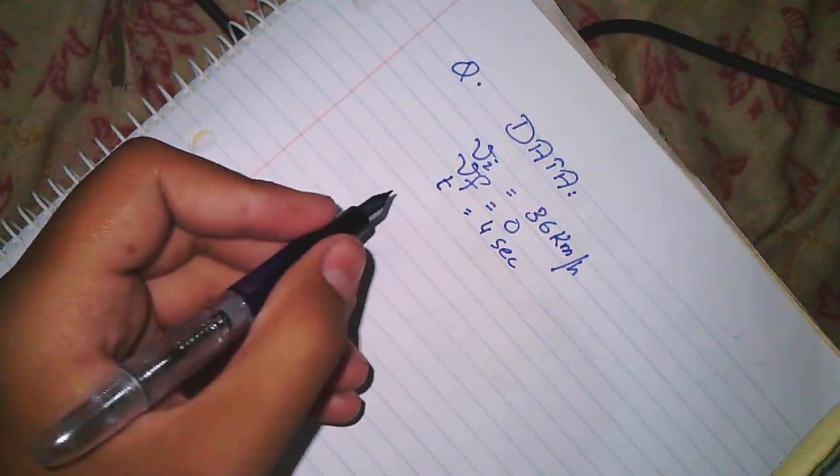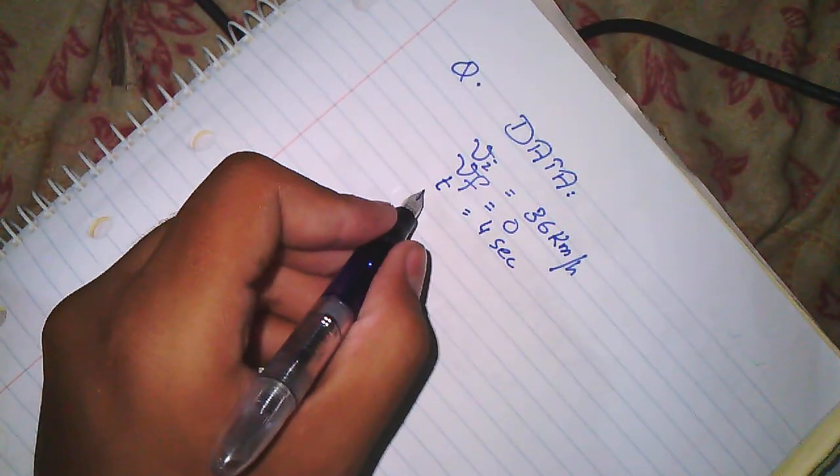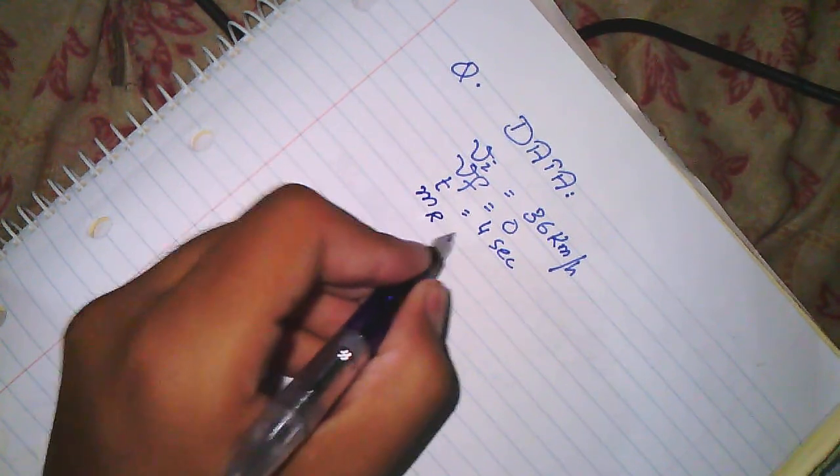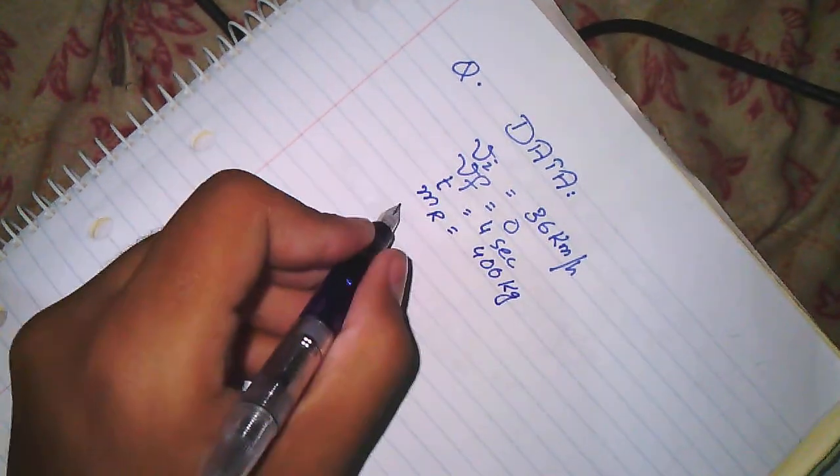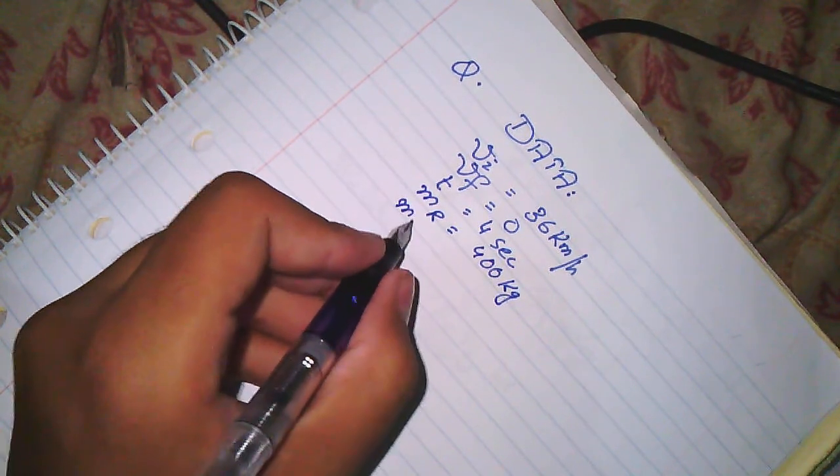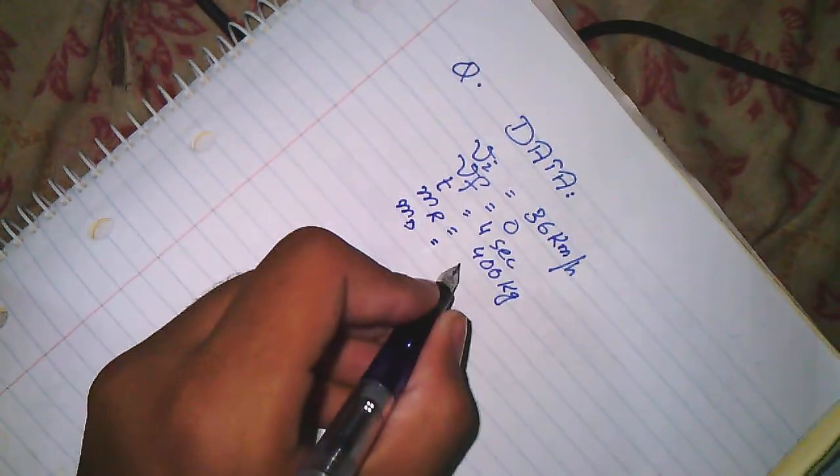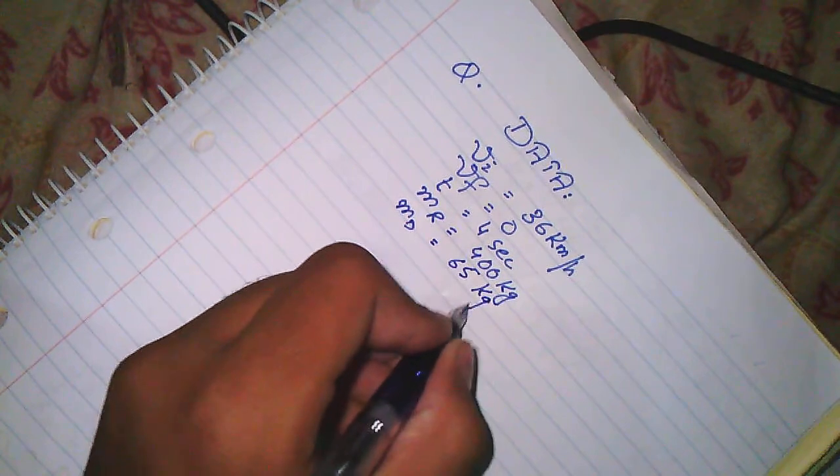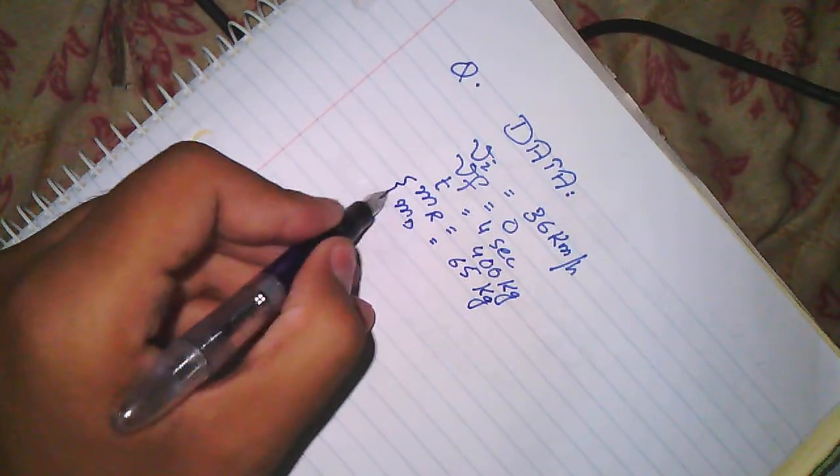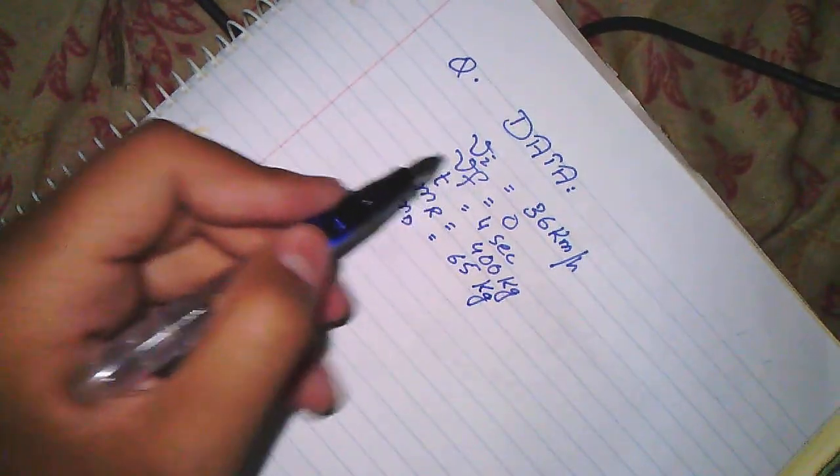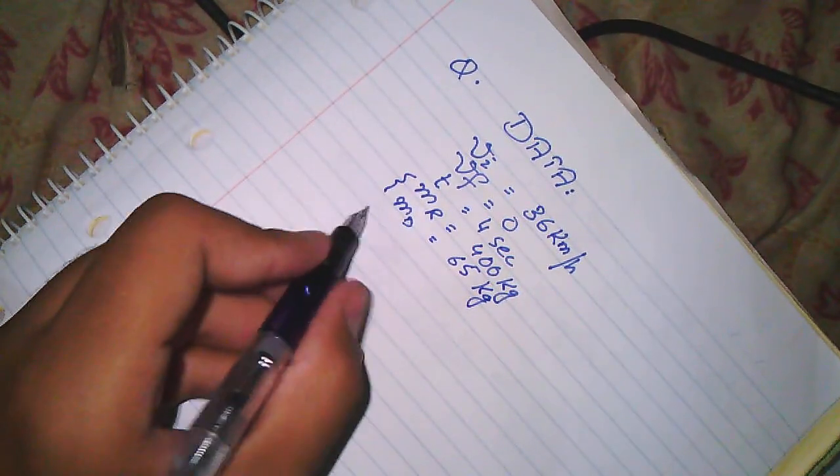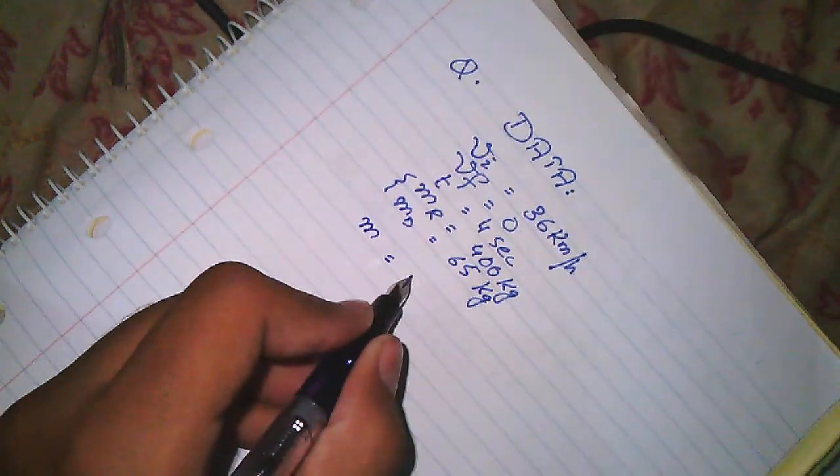In the last, we have given mass of the rickshaw, which we call MR, which is 400 kg, and mass of the driver, which we call MD, which is 65 kg.